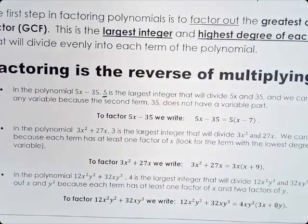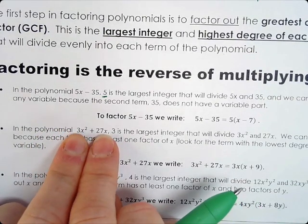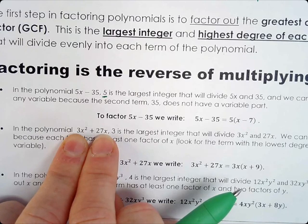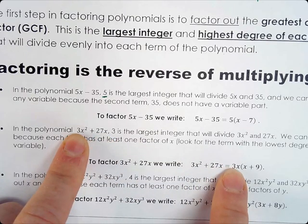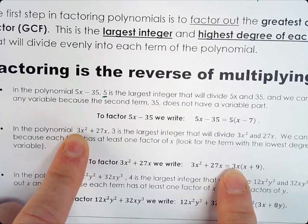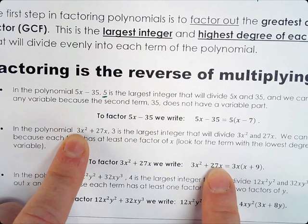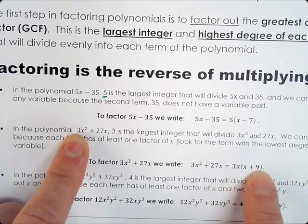The next one: 3x squared + 27x. We look and see what they have in common — they have 3 in common and also an x. So 3x is the GCF and we pull it out. Then 3x times x gives 3x squared, and 3x times 9 gives 27x.